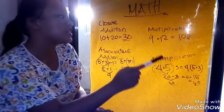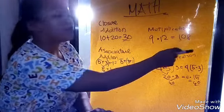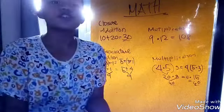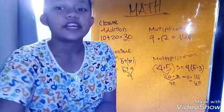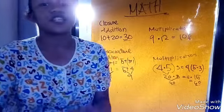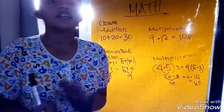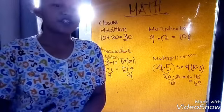While the multiplication is 9 times 12 is equal to 108. For associative property, associative property is property of some binary operations. Associativity is a valid rule of replacement for expression.